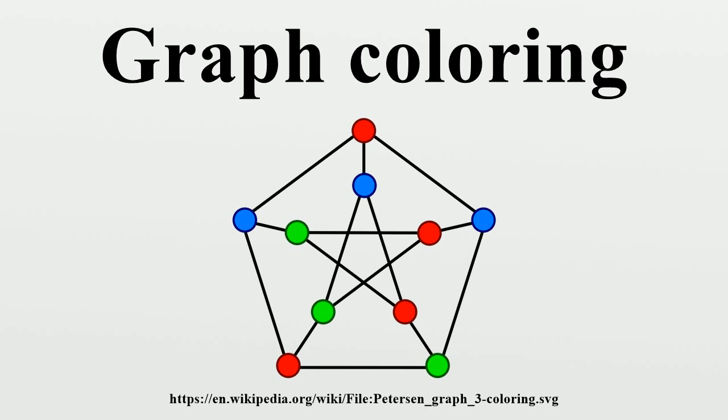A greedy coloring shows that every graph can be colored with one more color than the maximum vertex degree. Complete graphs have χ = n, and odd cycles have χ = 3, so for these graphs this bound is best possible. In all other cases, the bound can be slightly improved.